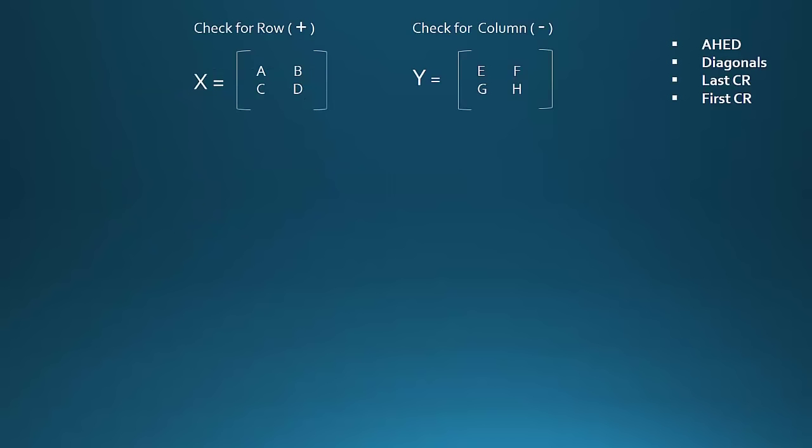So now we have two matrices X and Y. We have these four points and make a note that when we are looking for row we will consider plus sign and when we are looking for column we will consider a minus sign. So first write P1, P2, P3, P7 in your notebook.